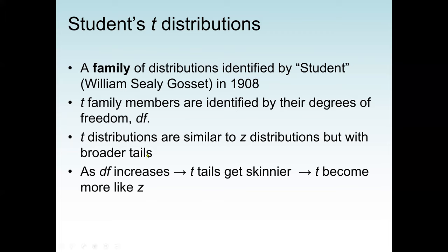T-family members are identified by their degrees of freedom. T-distributions are similar to Z-distributions but with broader tails, which place the T-distribution in a position of greater uncertainty. As the degrees of freedom (DF) increase, the T-tails get skinnier and T becomes more like Z. When the degree of freedom is very large, the T-distribution is almost the same as the Z-distribution.